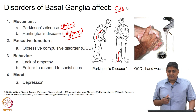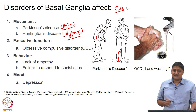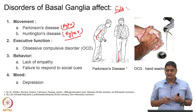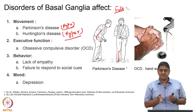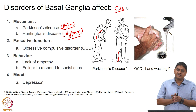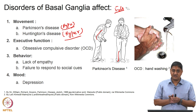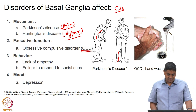If basal ganglia function is affected in the executive loop, then disorders such as obsessive compulsive disorder can occur — for example, frequent washing of the hands. The basal ganglia is implicated in this; its exact role is still not completely understood, but basal ganglia is at least implicated in executive functions or dysfunctions such as OCD.